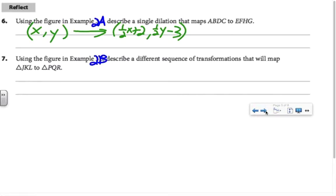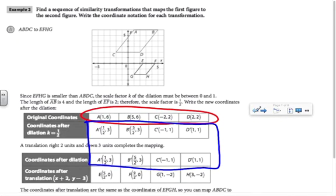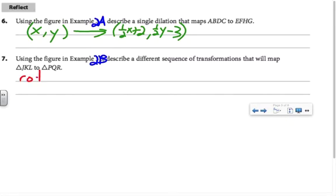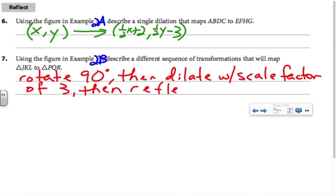In reflect 7, we're being asked to describe a different sequence of transformations that would have mapped JKL to PQR. I could have done the rotation first, and had I done the rotation first, JKL would be here. Then I could do the dilation and then do a reflection over the y-axis. So we could rotate 90 degrees, then dilate with a scale factor of 3, then reflect over the y-axis.